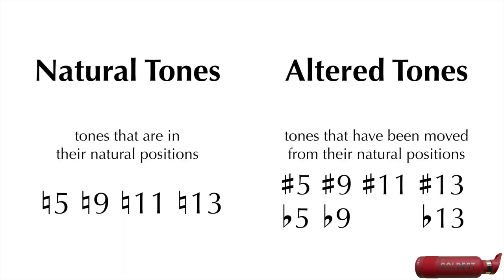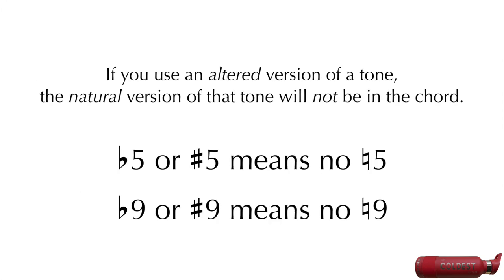The reason we don't use a b11 is because it is just the same tone as the major 3. Now, if you use an altered version of a tone, the natural version of that tone will not be in the chord. For example, if you use either a b5 or a sharp 5, then the natural 5 will not be in the chord. Similarly, if you use either a b9 or a sharp 9, then the natural 9 will not be in the chord.